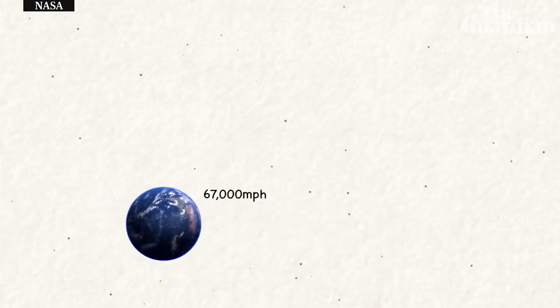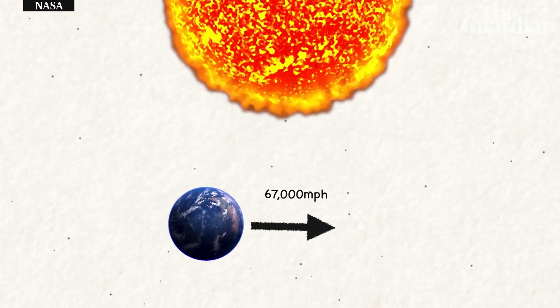Earth, and everything on it, is traveling very fast, about 67,000 miles per hour, in a direction that is basically always sideways relative to the Sun.